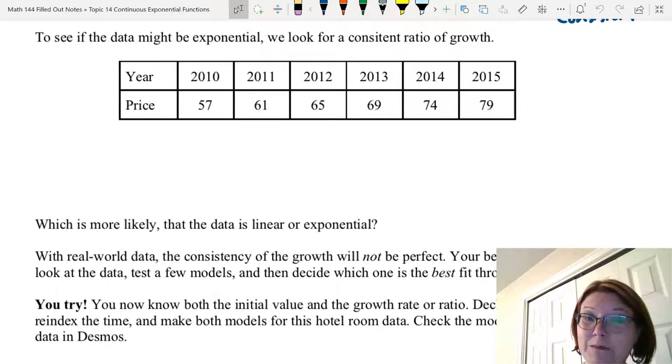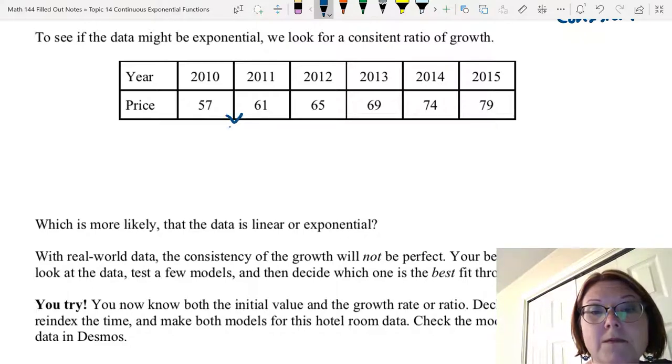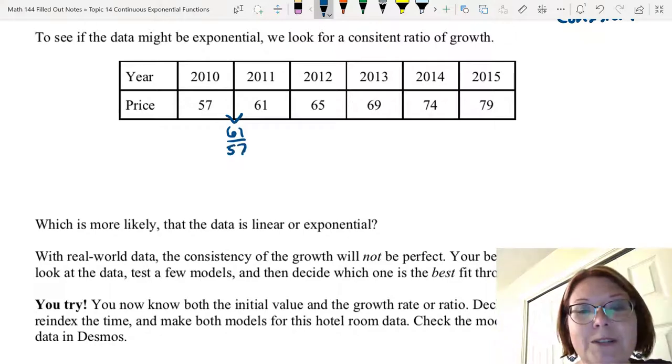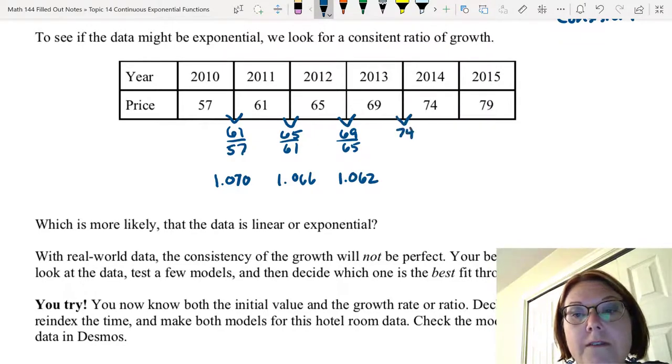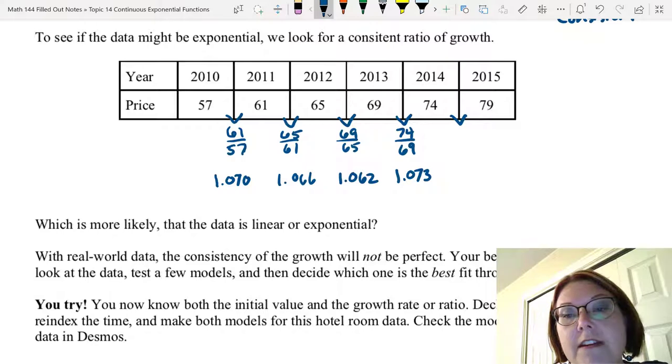To check if the data might be exponential, we look for a consistent ratio of growth. Same set of data. We take every pair of data points and take the ratio of the dependent part. For our first pair, this means we do 61 divided by 57, which is 1.070. I'm rounding to three decimal places on these. The next pair would be 65 divided by 61, which is 1.066. The next pair is 69 divided by 65, which is 1.062. Then 74 divided by 69, or 1.073. And finally 79 divided by 74, which is 1.068.